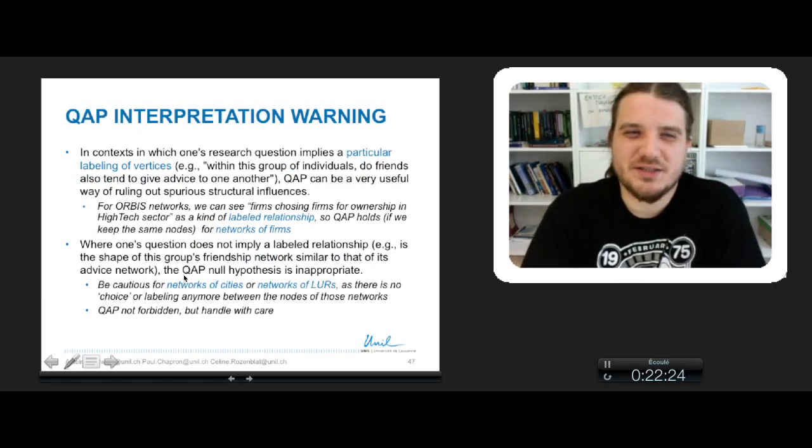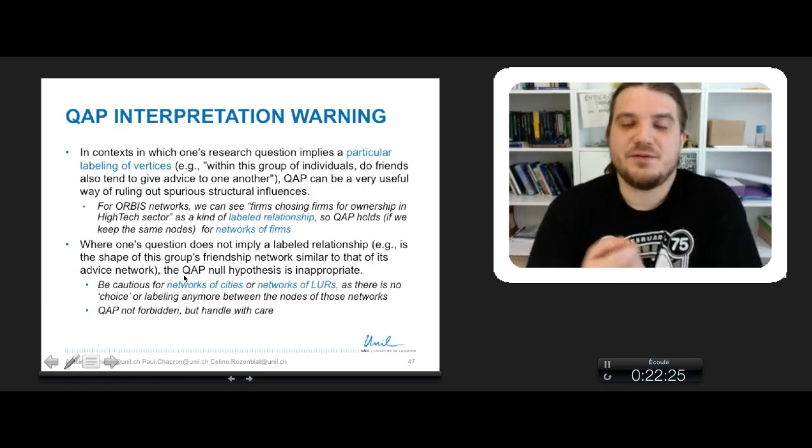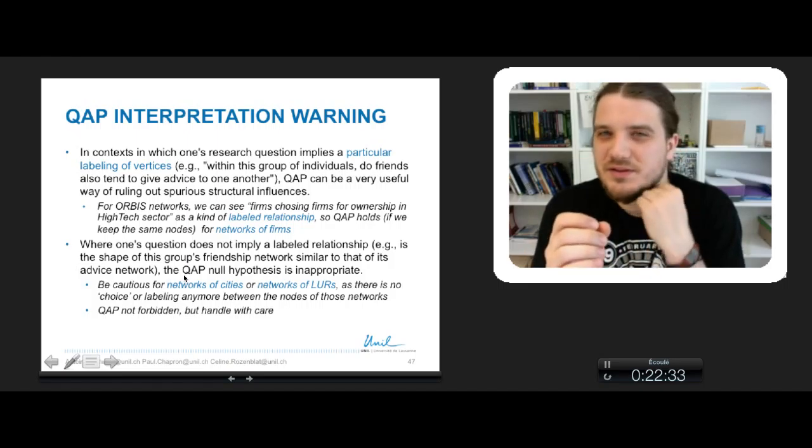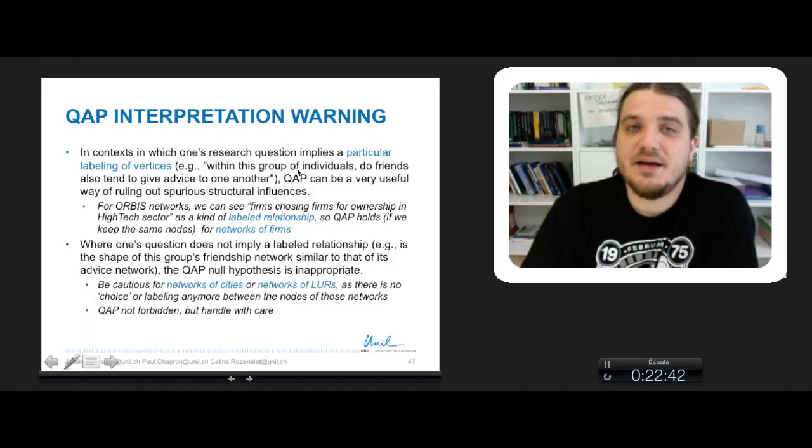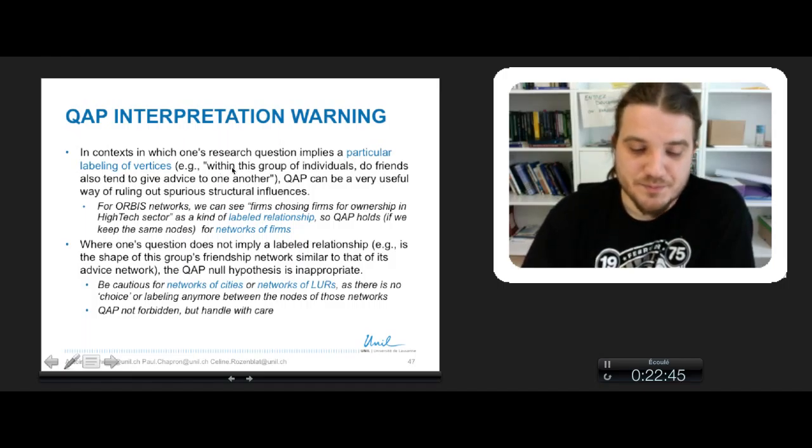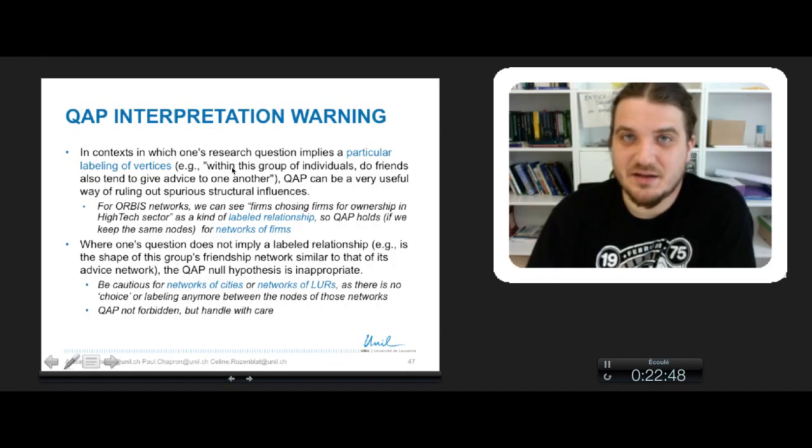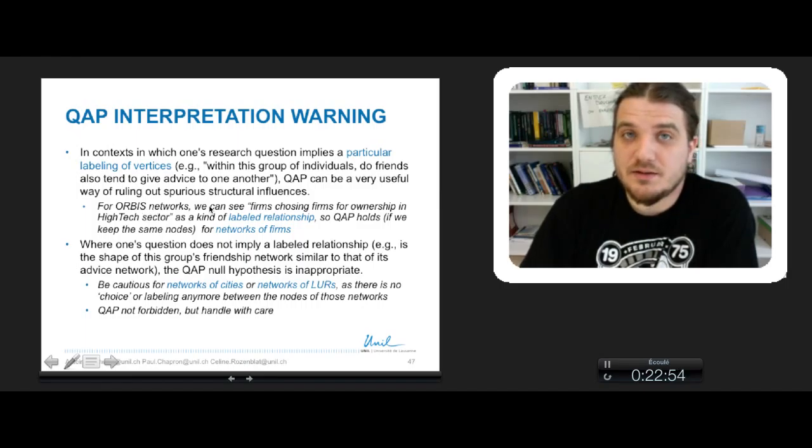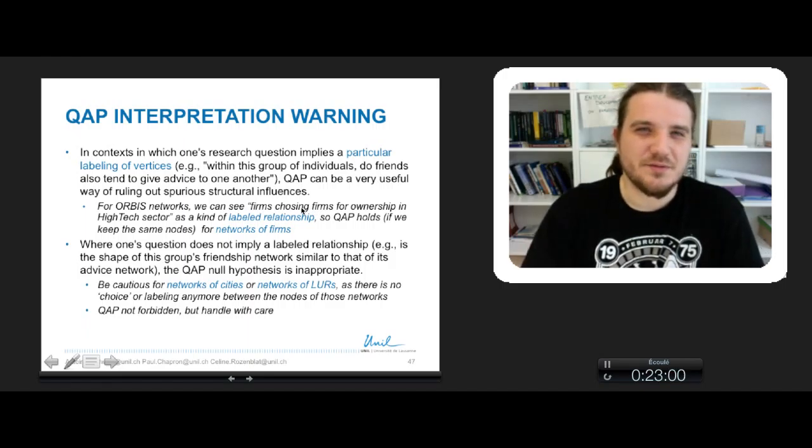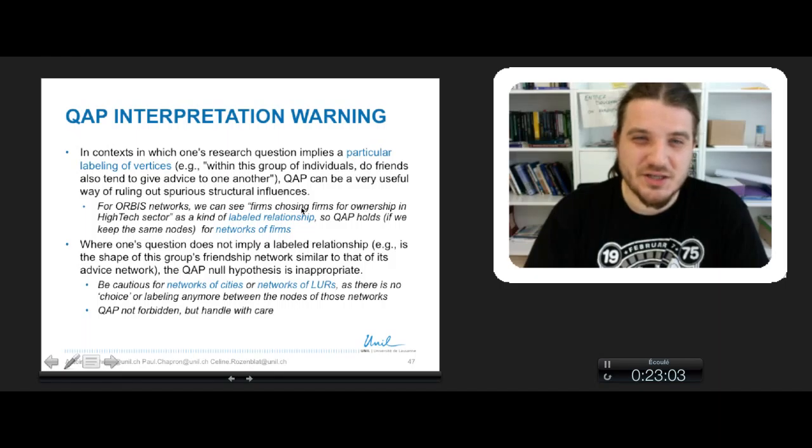It depends really on your research question. If you are in a context when your nodes have an identity, to identify a relation between two nodes means that there is a nomination, a labeling that matters to define a link between two nodes. In this case, a QAP is very useful to evacuate some biases of data collection. In our case, for our business network, when a firm owns another firm, you can say that the firm chooses another firm to be subsidiary. This is a labeled relationship. So the QAP test will hold if you kept the same nodes for networks of firms.